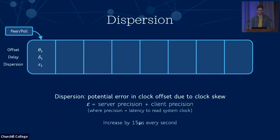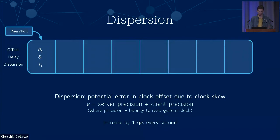We now need to decide which servers are selectable. We start by calculating the dispersion for each sample, which is a measure of the error bounds of what the actual offset could be due to the client's and server's clocks skewing apart over time. We calculate that as the sum of the precisions of the server and the client, where precision means the latency of reading the system clock — in modern machines that's around 100 to 1000 nanoseconds. The server precision is sent to us from upstream packets, and we increase this by 15 microseconds every second because over time the clocks could drift further apart.